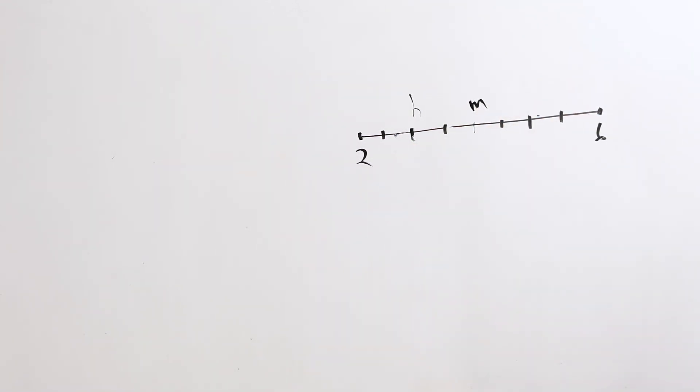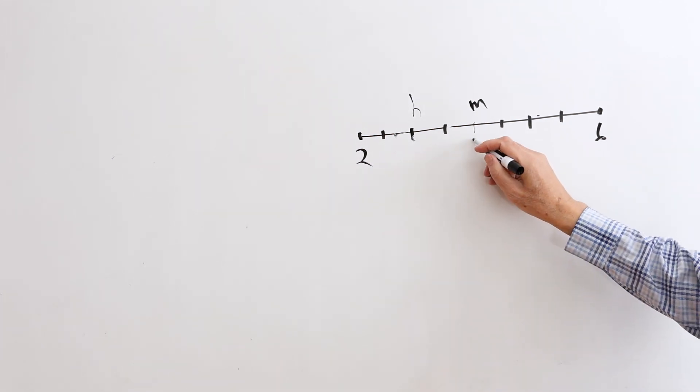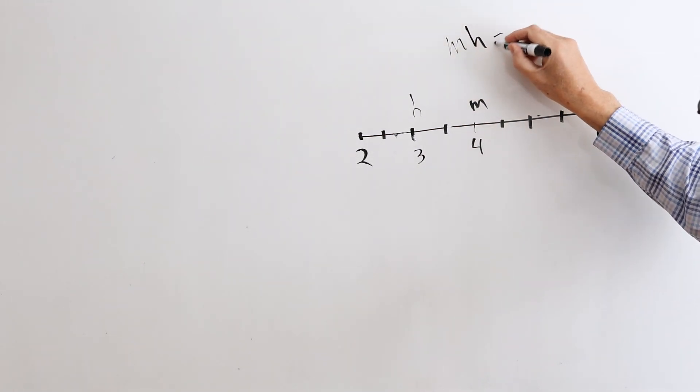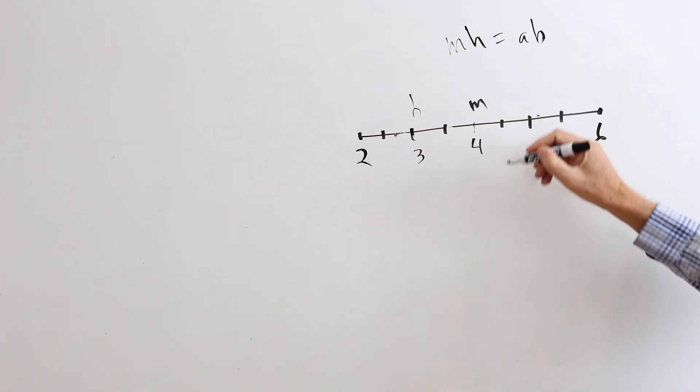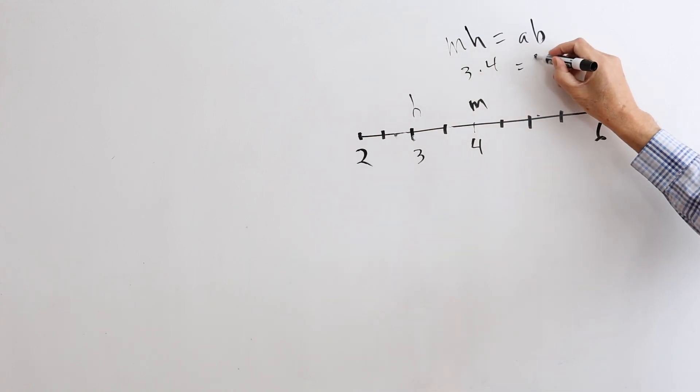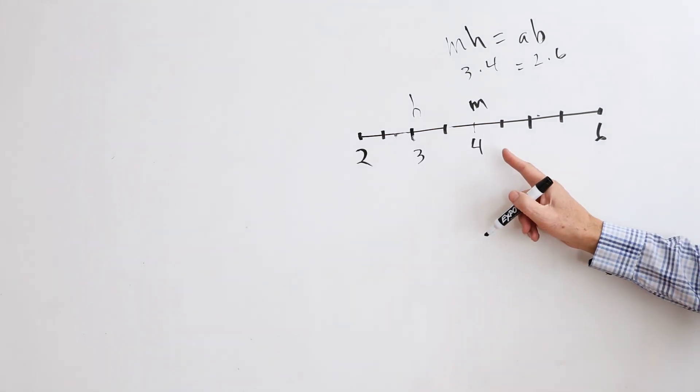And so, in this case, this would be 4, and this would be 3, and we want MH to be equal to AB. And that's true, because MH is 3 times 4, and this is 2 times 6. As I said, as a consequence, we can locate the harmonic mean easily on the number line.